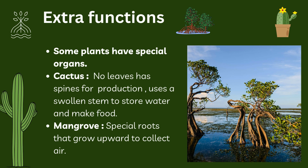Some plants have organs with unusual functions. Like the cactus — it does not have leaves; instead it has spines to protect itself. Its green stems make food and store water. And as you can see in this picture, mangrove plant roots grow upward to collect air, since the soil is muddy and has very little oxygen.